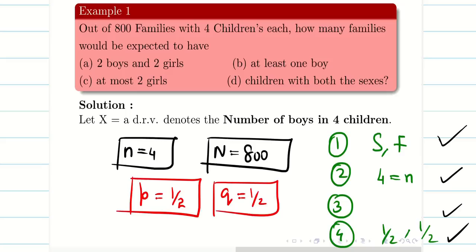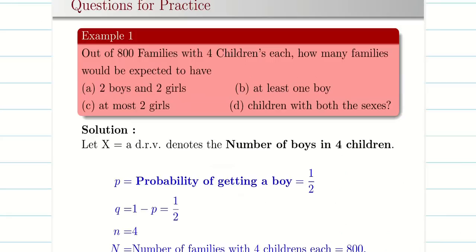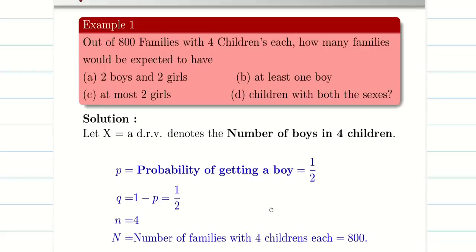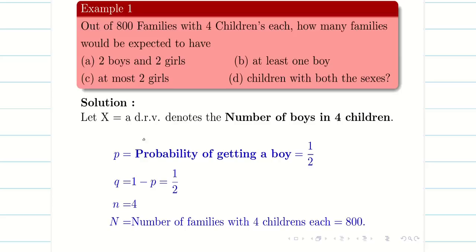So let us set up formally: X is a discrete random variable denoting the number of boys in 4 children. p = 1/2, q = 1/2, n = 4, N = 800. Since P and Q are same, the formula simplifies nicely. The general formula becomes nCx · (1/2)^x · (1/2)^(4−x) = 4Cx/16. X takes values from 0, 1, 2, 3, 4.